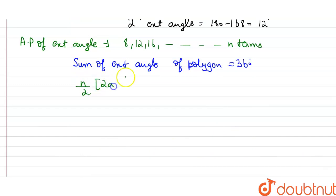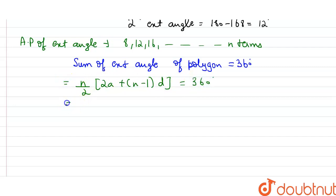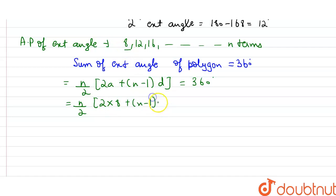Applying the sum of AP formula: S = n/2 × (2a + (n−1)d), where n is number of terms and d is the common difference. So n/2 × (2×8 + (n−1)×4) = 360 degrees.